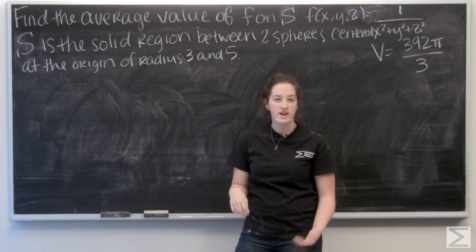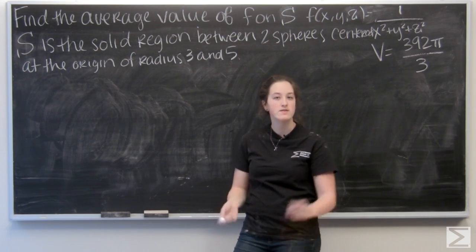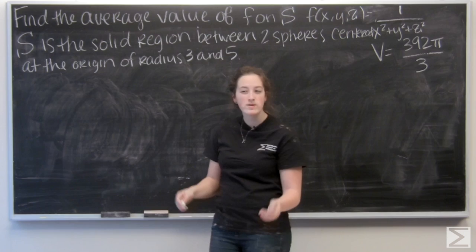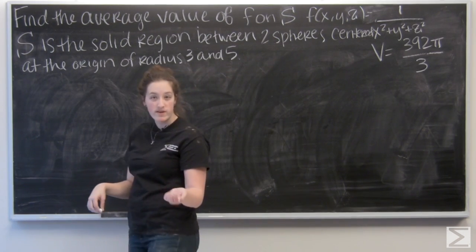So now I want to integrate F over this region. So I have two spheres. Immediately I'm thinking spherical coordinates. So I know rho is kind of like my radius. So that's going to go from 3 to 5.